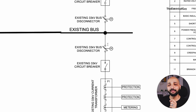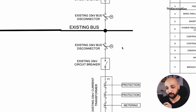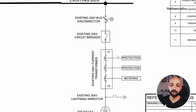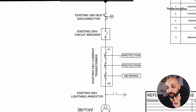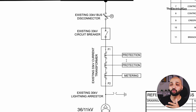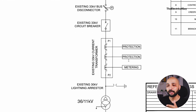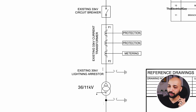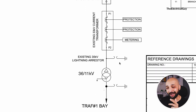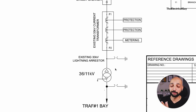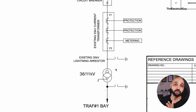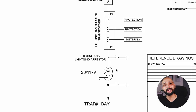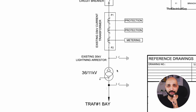After the bus bar, there is again a disconnector without an earth switch, then a circuit breaker. After that we have a three-core current transformer — two cores are used for protection purpose and the remaining one is used for metering purpose. Then there is a lightning arrester, followed by the transformer, which is one of the most expensive pieces of equipment. This transformer accepts the 36 kV incoming supply and steps it down to 11 kV.